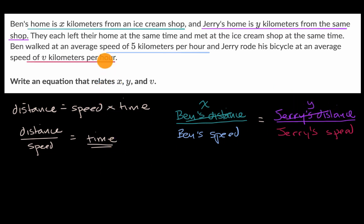We know that Ben's speed is five kilometers per hour. So we're assuming everything is kilometers per hour. So this would be five. And then Jerry's speed is V kilometers per hour. So this is V right over there.